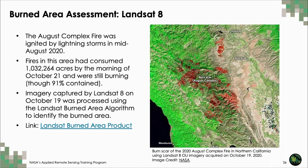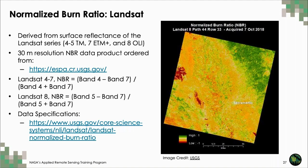Here you can see an example of the Landsat burned area product. The August Complex fire in Northern California was ignited by lightning storms in mid-August 2020, consuming over 1 million acres by October 21st. The burn scar mapped using the Landsat burned area product shows the extent as of October 19th. Landsat data is also very useful for calculating the Normalized Burn Ratio. For Landsat 4 through 7, the relevant bands are 4 and 7; for Landsat 8, they are bands 5 and 7, at 30-meter resolution.